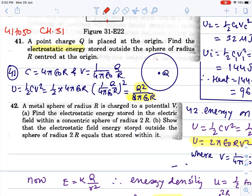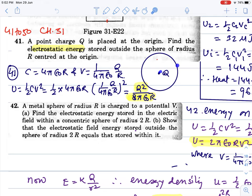What is given in this point? Q is placed at the origin. Find the electrostatic energy stored outside the sphere of radius R, centered at origin. This is outside the radius R. So, what do we do first? We have to write the capacitance.